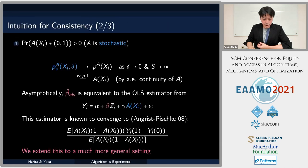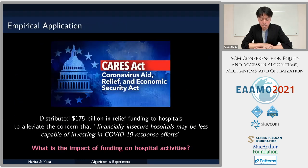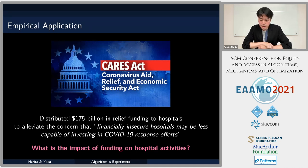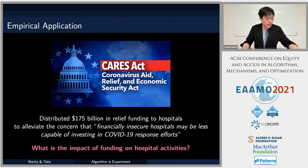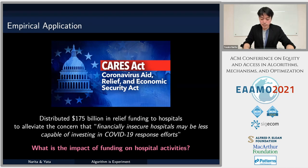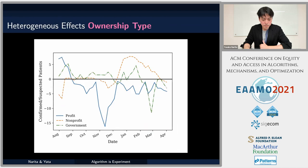As an empirical application, we apply our method to evaluate the impact of the CARES Act — the Coronavirus Aid, Relief, and Economic Security Act — probably the largest economic stimulus package in U.S. history since World War II. This act distributed hundreds of billions of dollars in relief funding to struggling hospitals during the COVID-19 pandemic. The concern was that financially insecure hospitals may be less capable of investing in COVID-19 response efforts. We use our method to answer whether this concern was alleviated by this massive funding.